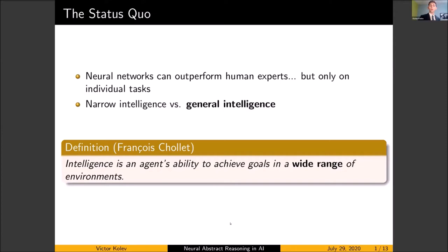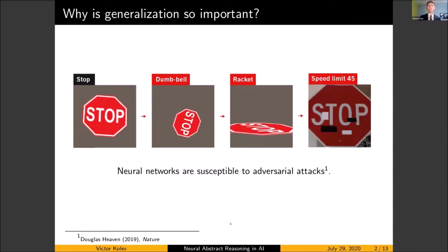So why is this generalization to new tasks so important? If we take autonomous driving as an example, on the road an autonomous vehicle would see a stop sign in a lot of different orientations and weather conditions, and it is absolutely crucial that the neural network can recognize this stop sign consistently. However at present the same neural network can classify the same stop sign as either a dumbbell, a racket, and a 45 mile per hour speed limit. This is one of the major setbacks of autonomous driving and one of the major challenges in front of fully autonomous vehicles.